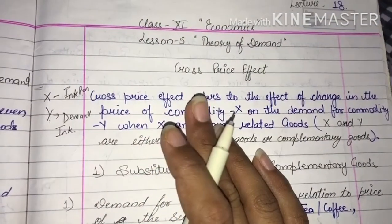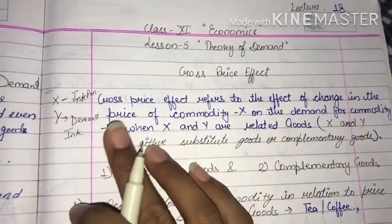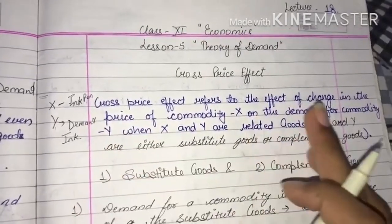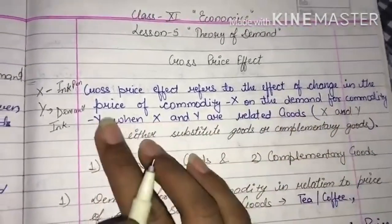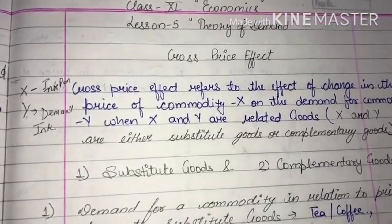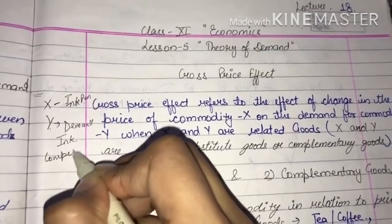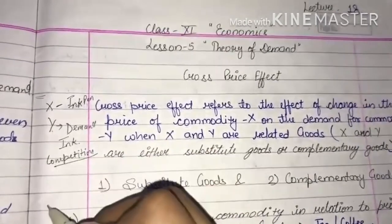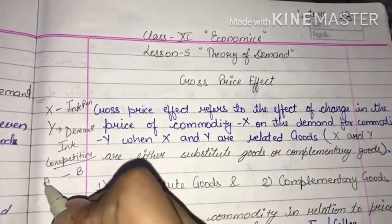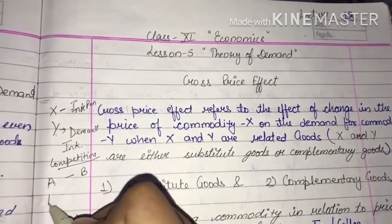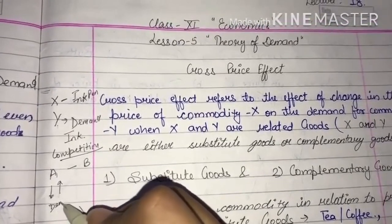Cross price effect means that when you change the price of your own product, the opposite product's demand also changes. In our competitive lifestyle, we compare ourselves with competitors by adjusting our prices up or down, and this affects the demand increase or decrease.